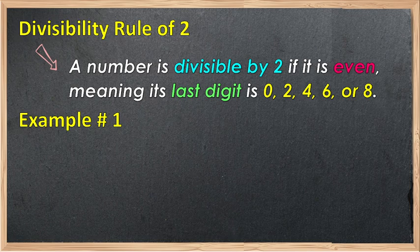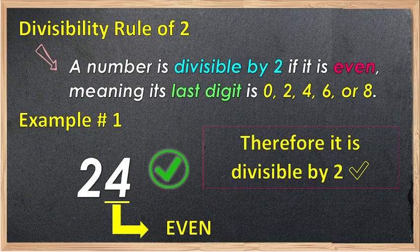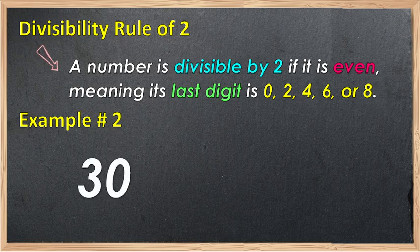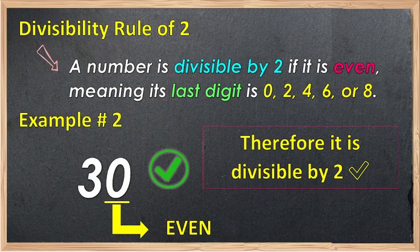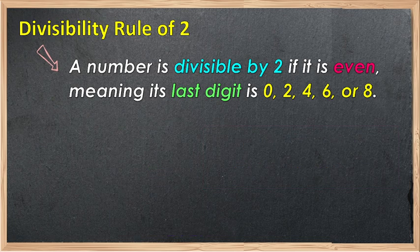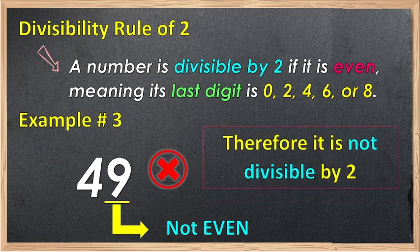Let's have some examples. We have 24. The last digit of 24 is 4 — an even number. Therefore, it is divisible by 2. Example number 2: we have 30. The last digit is 0, an even number. Therefore, it is divisible by 2. Next, we have 49. The last digit is 9 — not an even number. Therefore, it is not divisible by 2.